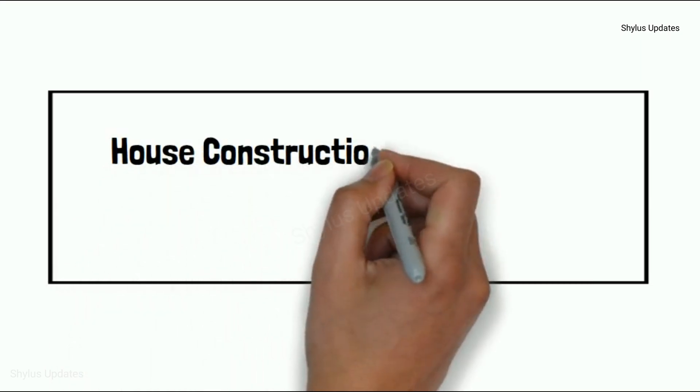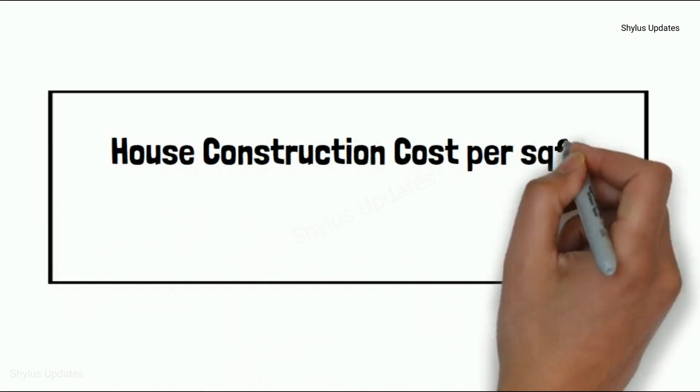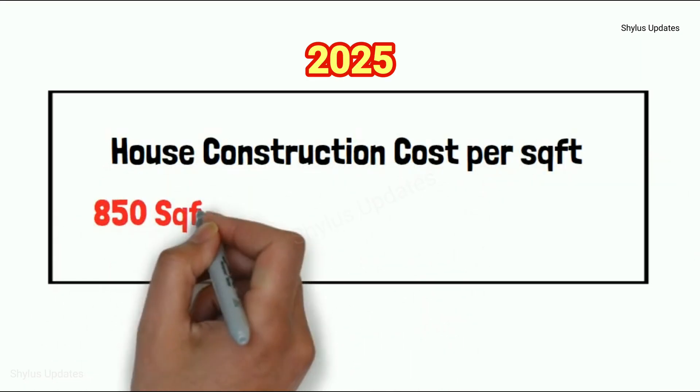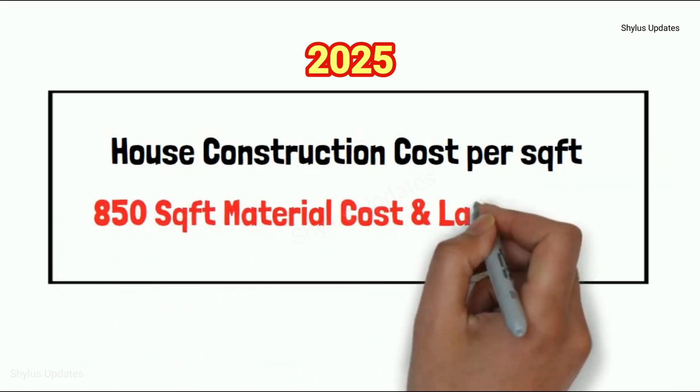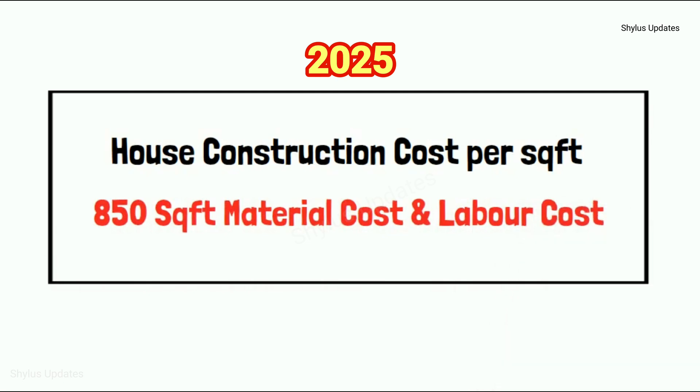House construction cost per square feet: 850 square feet material cost and labour cost.